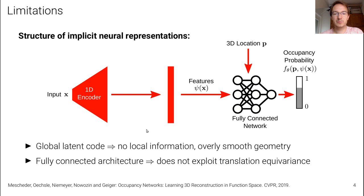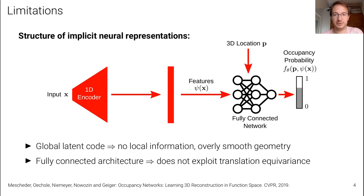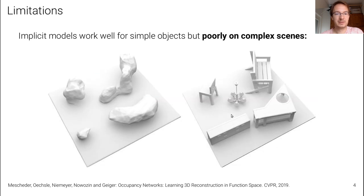The problem is that we have a global latent code that doesn't capture local information in the input, leading to overly smooth geometry. The function class of possible shapes is fundamentally limited through the architecture — a vanilla fully connected neural network that doesn't exploit translation equivalence properties present in many input domains. As a result, implicit models work well for simple objects but poorly on complex scenes.